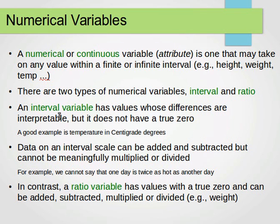For example, temperatures. We speak about intervals. Data on an interval scale can be added and subtracted, but cannot be meaningfully multiplied or divided. What that means is when we measure temperatures, we don't really care about doubling a temperature or multiplying it by 2 or 3 or 4.